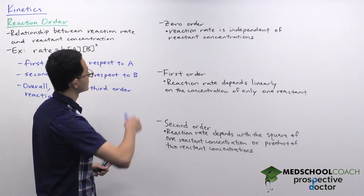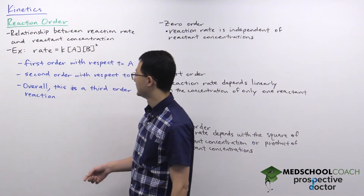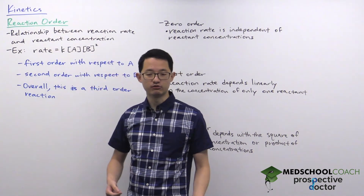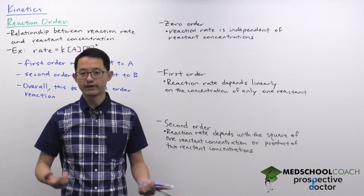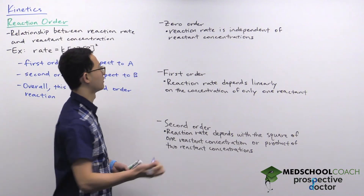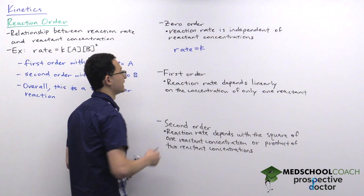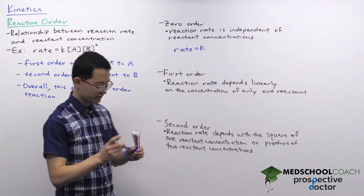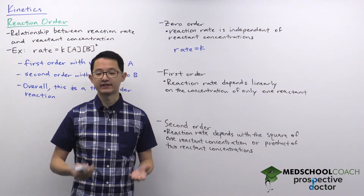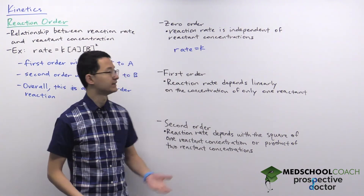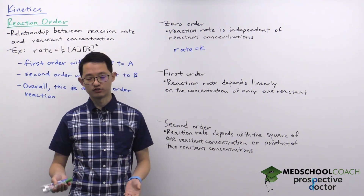A zeroth order reaction means the exponent is zero, and anything to the power of zero is just one. You wouldn't even write the reactant concentrations in the rate law — the rate law simply becomes rate equals K. This means the reaction rate does not depend on reactant concentrations. The reaction rate is independent of reactant concentrations.